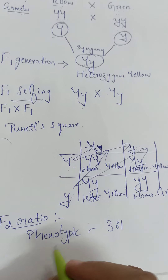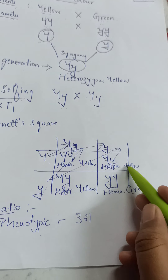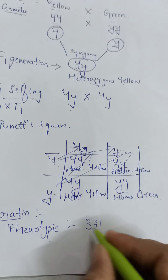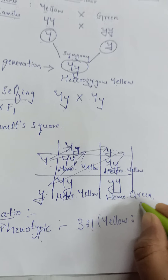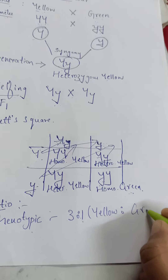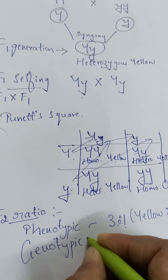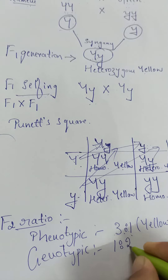Finally we write the F2 ratio. The phenotypic ratio is always 3:1 in a monohybrid cross. Three means externally we see three yellow, and one means one green. So externally we get three yellow and only one green — the phenotypic ratio is 3:1.